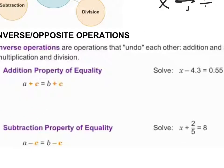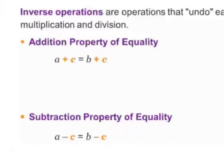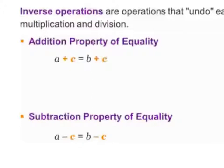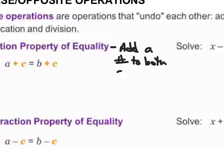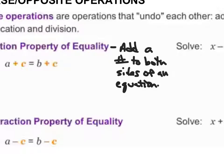Now I want to talk about these properties of equality. When I talk about the addition property of equality, what this means is that we add a number to both sides. So that means we add a number to both sides of an equation.